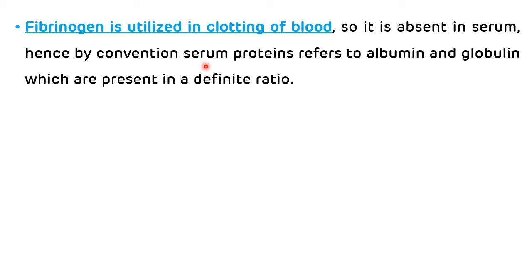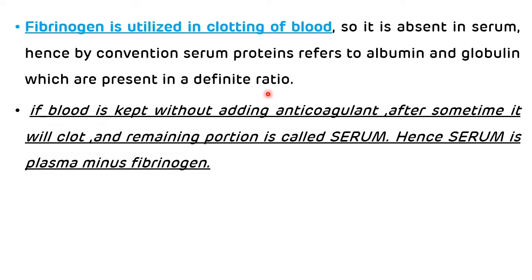By convention, serum protein refers to albumin and globulin, which are present in a definite ratio. If blood is kept without adding an anticoagulant, after some time it will clot and the remaining portion is called serum. Hence, serum is plasma minus fibrinogen, that is, serum is defibrinated plasma.